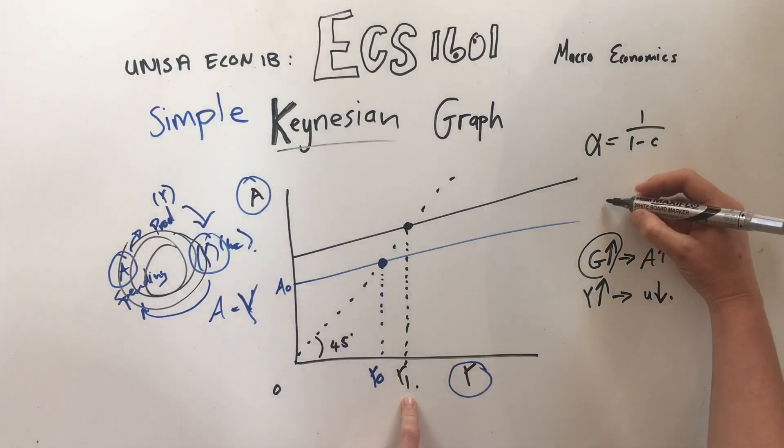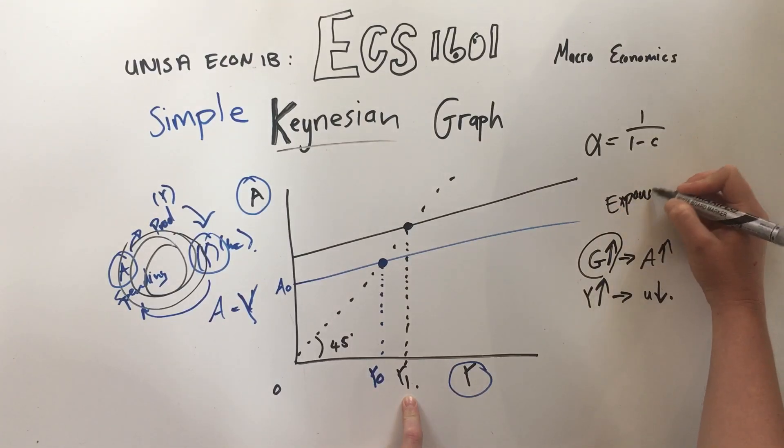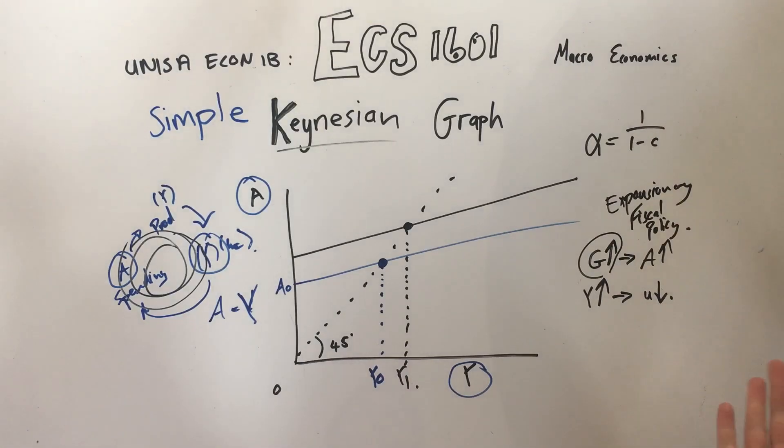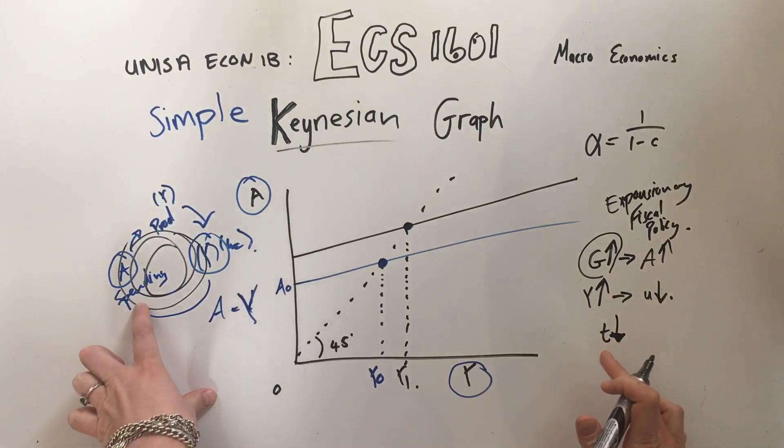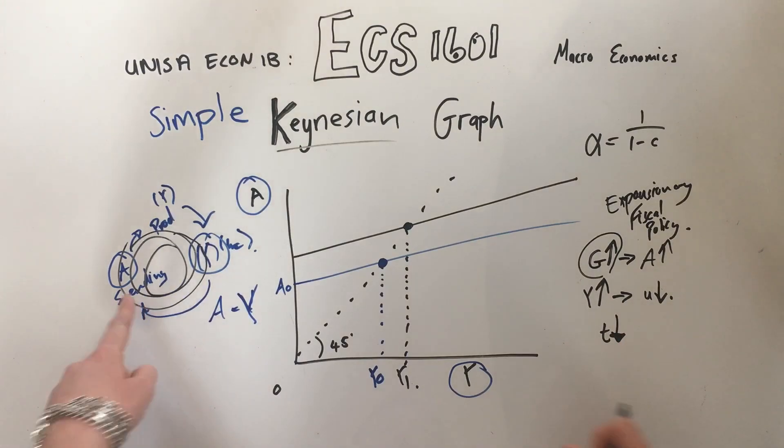If they increase government spending, that is an expansionary fiscal policy. The other way to do this exact same thing is if taxes go down, and the reason for that is when taxes go down there's more money to spend.